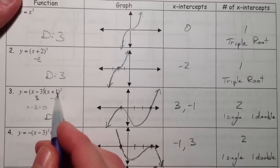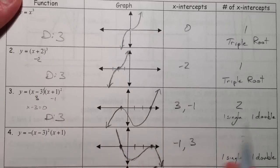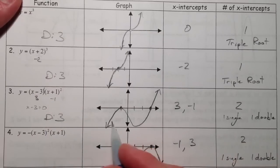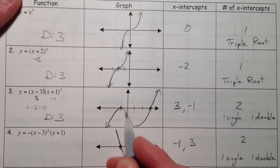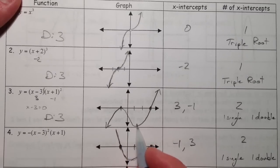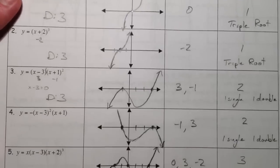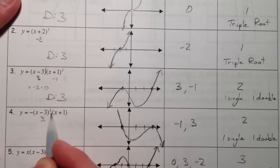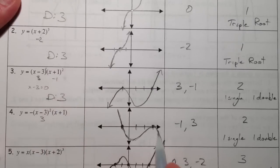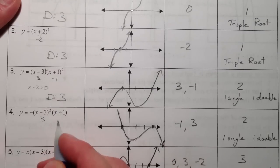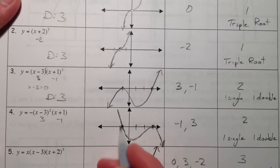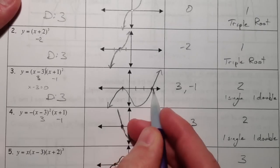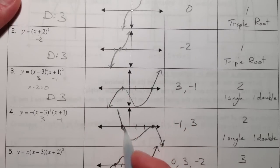x plus one is squared, so negative one is what we call a double root. At negative one it's doing this little bounce thing — it's tangent to the x-axis. And going back to the next example, at three it has the double root, so at three it's doing the bounce. At negative one it's just crossing.